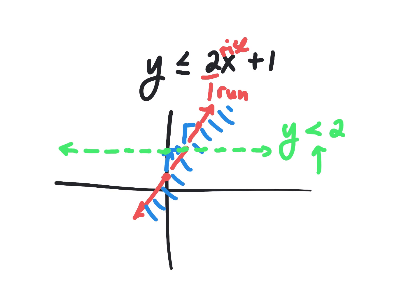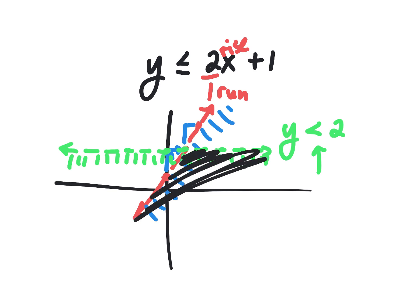Now, less than — I'm shading underneath it. What area got double shaded? That area got double shaded. And if I extended my lines out, I could extend it even further. Does that make sense?